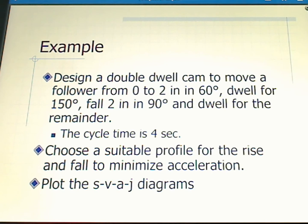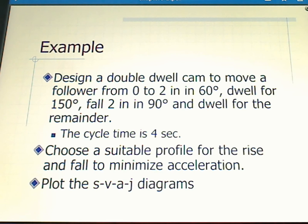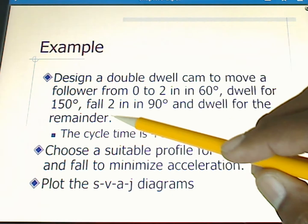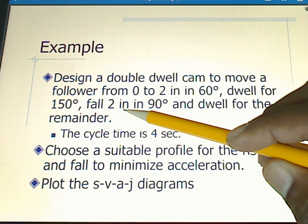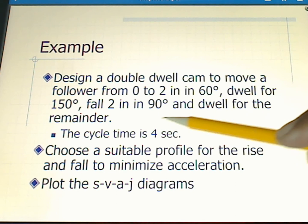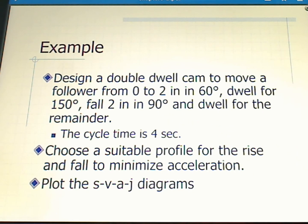Let's discuss an example of double dwell cam design. In this particular example, we're going to be designing a double dwell cam to move a follower from zero to two inches in 60 degrees. We're going to dwell for 150 degrees, fall again back to zero, falling two inches in 90 degrees, and dwell for the remainder.